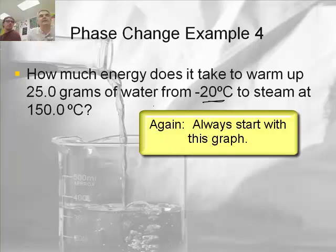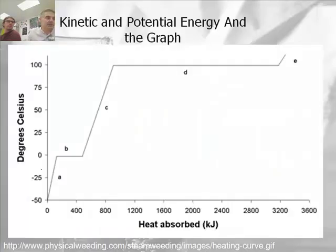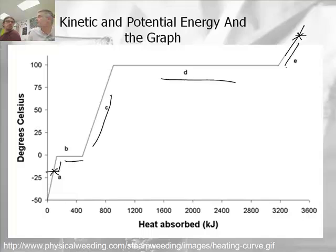Let's not do example five. So this problem, Mr. Stamms, we're going to have to map the whole thing out. Yeah, let's do that. From negative 20, so we're starting here at negative 20. And we're going to go all the way up to steam at 150. Oh my gosh. So we're going to have a five-step problem, Mr. Stamms. A, B, C, D, and E.